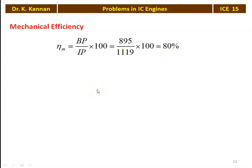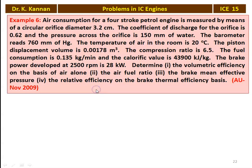All parameters for problem 5 have been calculated. Problem number 6: Air consumption for a 4-stroke petrol engine is measured by a circular orifice of diameter 3.2 cm. The coefficient of discharge is 0.62 and the pressure across the orifice is 150 mm of water. Atmospheric pressure is 760 mm of mercury; air temperature is 20°C. Piston displacement volume is 0.00178 m³, compression ratio is 6.5, fuel consumption is 0.135 kg/min, and calorific value is 43,900 kJ/kg.